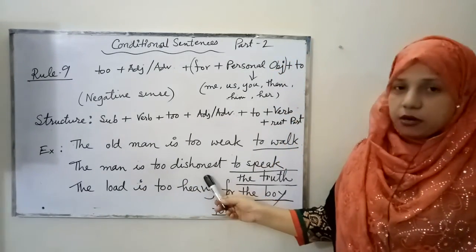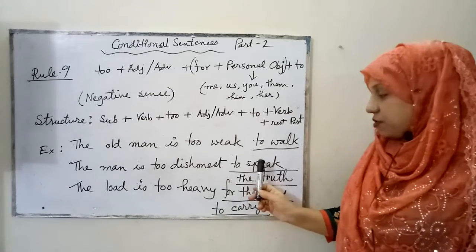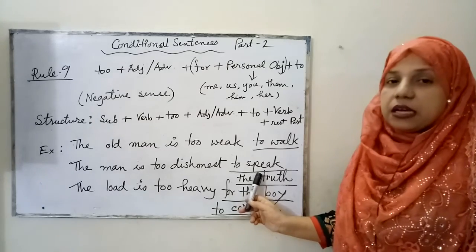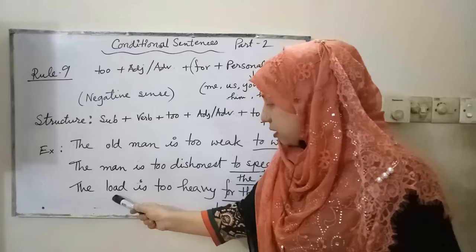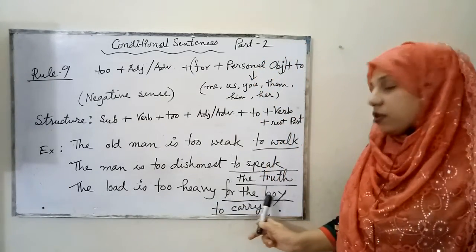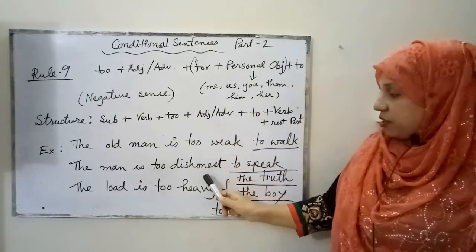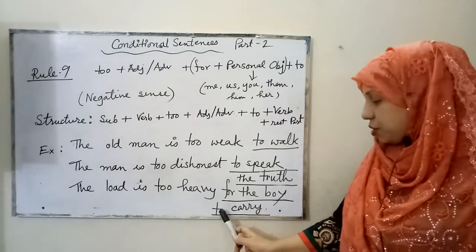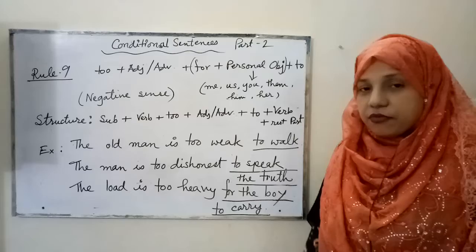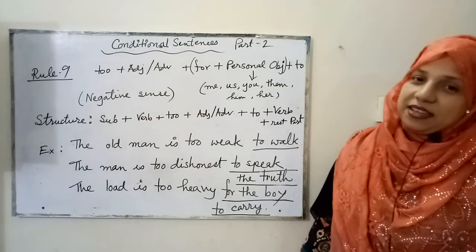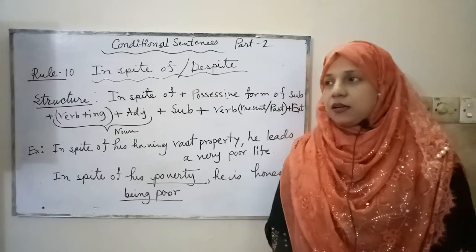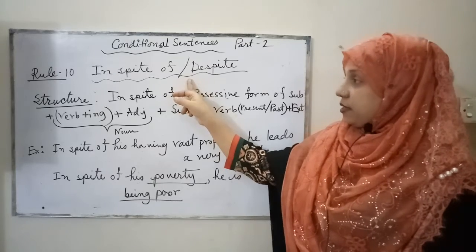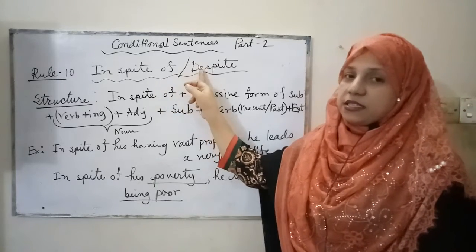Another example: 'The man is too dishonest to speak the truth' — this also carries a negative sense. And: 'The load is too heavy for the boy to carry,' meaning the load is so heavy that the boy cannot carry it. Notice in this sentence, the 'for + personal object' structure is present. Next comes rule number 10.